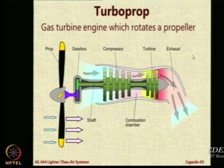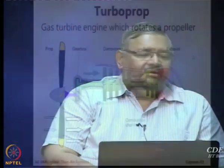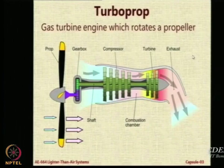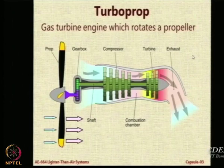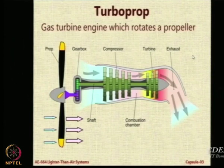There are also some other types of engines which are popular for airships. One of them is the turboprop type. The turboprop type comes in two versions. One is this particular configuration where we see an axial turbine having a compressor, combustion chamber, and turbine. Onto the compressor shaft, you attach a gearbox and that drives the propeller.